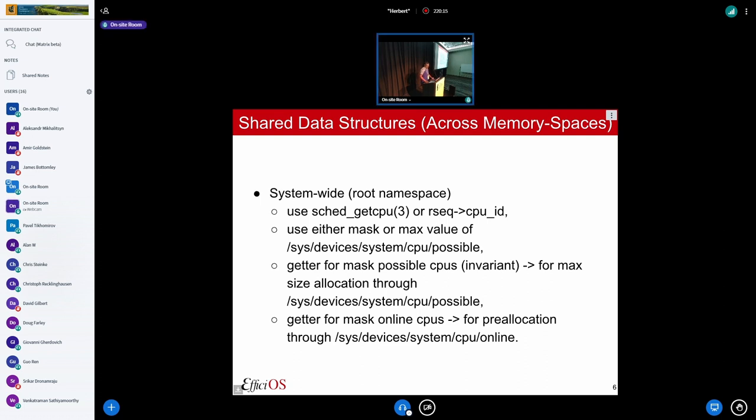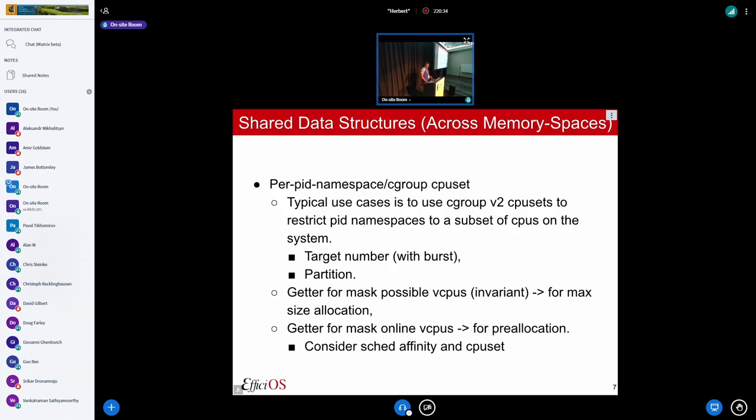So that's a summary about what happens in the root namespace. Basically I use the number of possible CPUs. I use get CPU to index through it, and that's pretty much it. But in a PID namespace or cgroup CPU set, the typical case is to use the CPU sets to restrict PID namespace to a subset of CPUs on the system. So as I understand it, you can specify target number of CPUs and then it can burst and kind of use CPU outside of that. And there's also a mode where you can really partition. So you delegate a partition of the mask of CPUs. And this is the domain CPU sets. There's also threaded CPU sets.